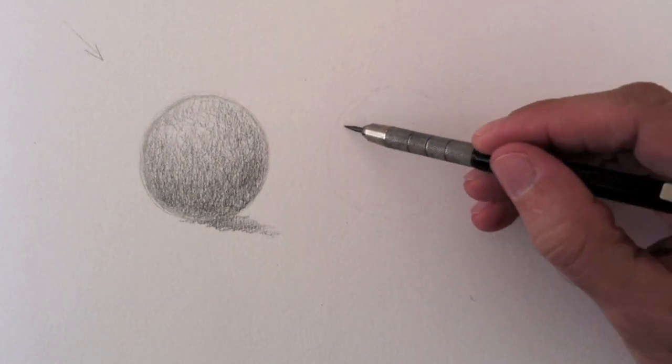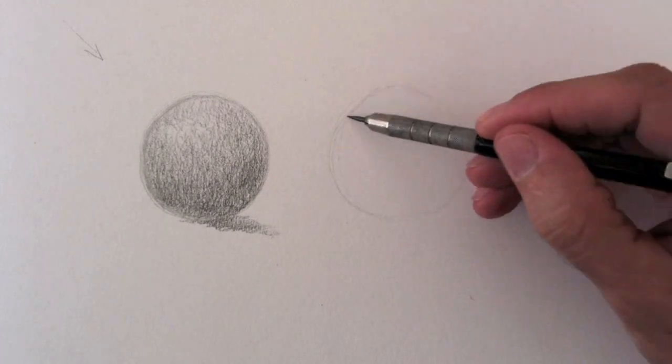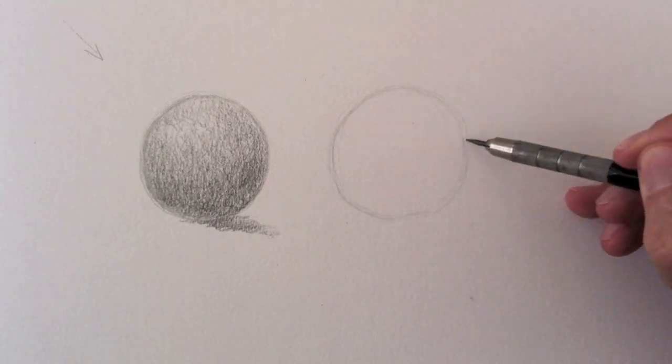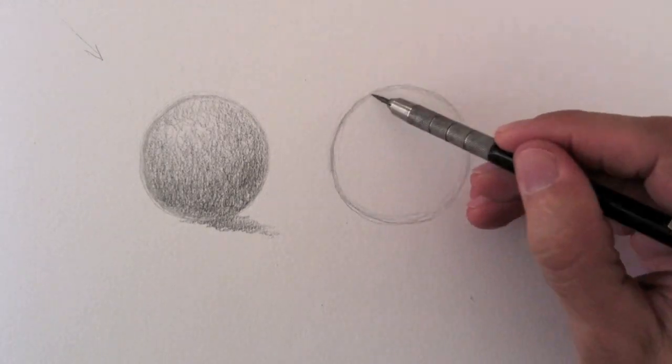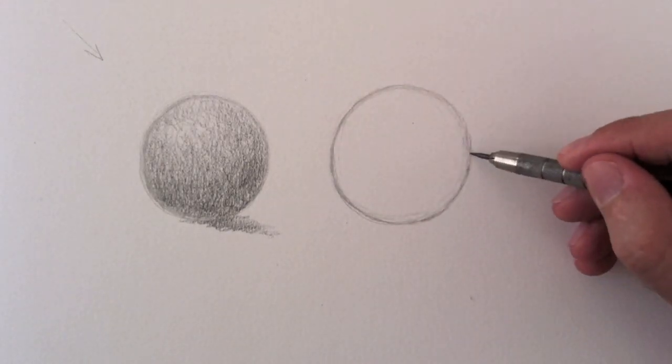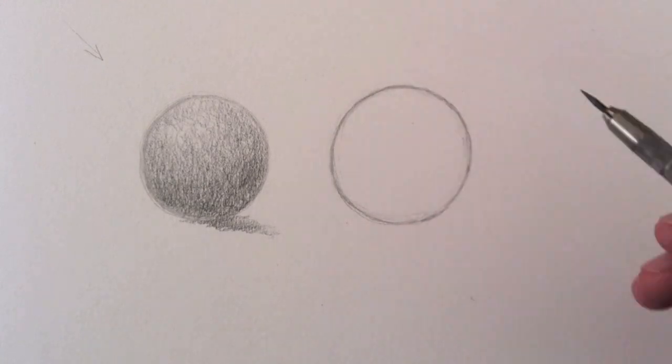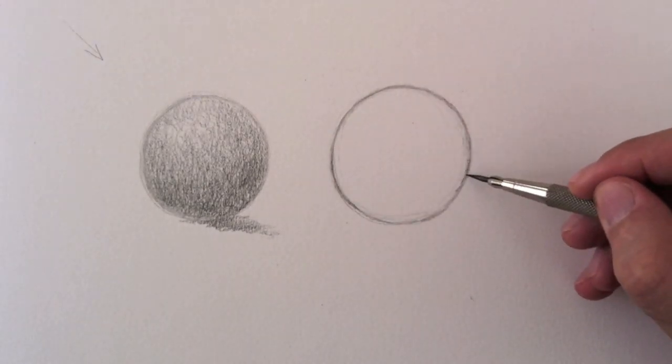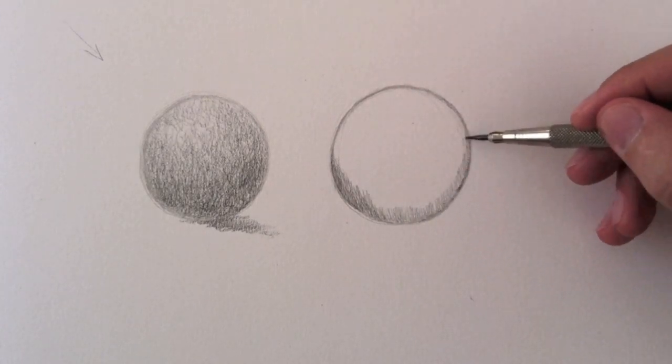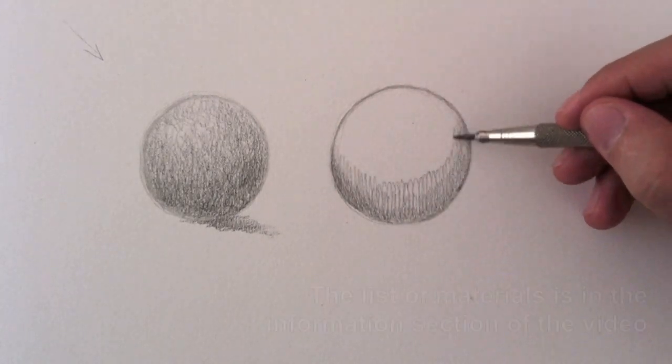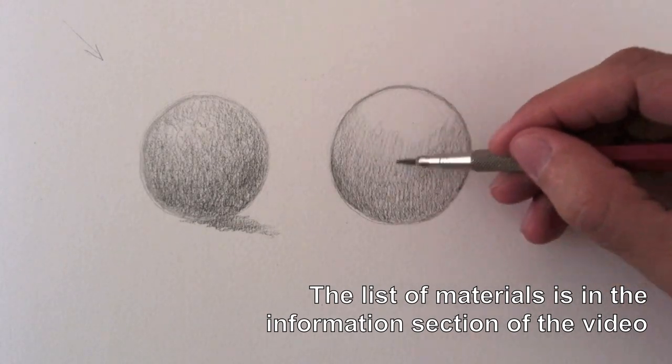For the second one I do the circles again, hoping I get them right. I go over it nicely and I start the shading. This time I want it much more even. I am using a 2B lead which is soft and is the same one I use for the prior sphere.